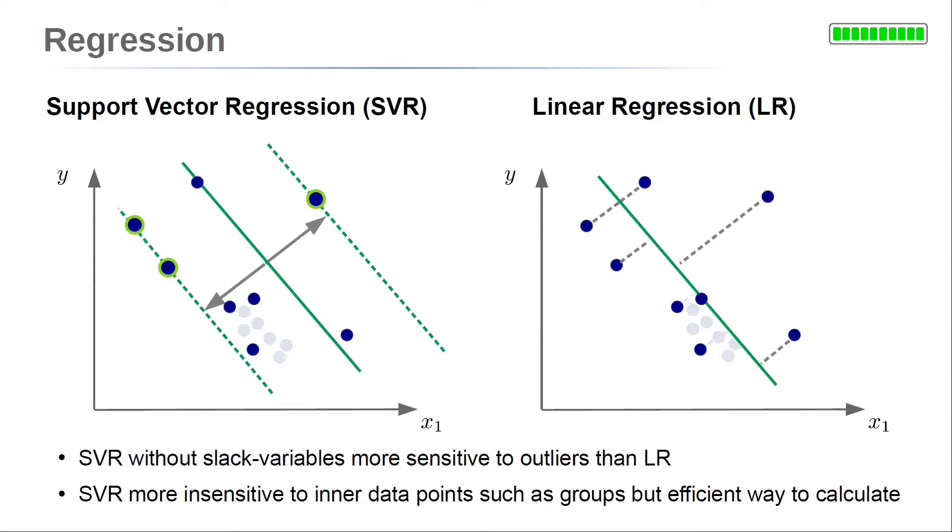However, this does not affect only outliers. For example, consider a group of data within the margin. Linear regression uses a cost function like mean squared error, which takes all data points into account. And a group of data points give much more weight to the cost function, so it attracts the model line.